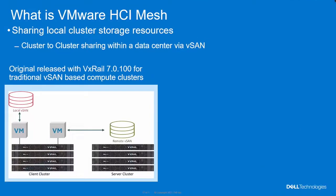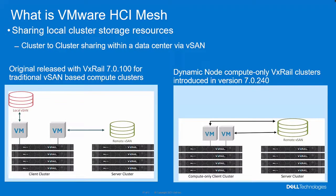HCI Mesh is basically sharing of vSAN-based storage from one cluster to another. Prior to our 7.0.240 release, each cluster contained some level of vSAN resources. You may have a cluster with excess vSAN storage capacity and you can share it over the network to another cluster that was maybe short on capacity. With this new release, with the dynamic nodes, you can have a dynamic node with no vSAN storage and get your vSAN-based storage from a remote cluster within the same data center floor.